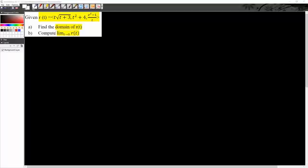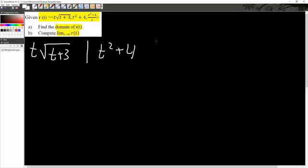So, let's do the domain first. We have t times square root of t plus 3. This is one thing we have. We also have t squared plus 4, and we also have e raised to t minus 1 divided by t.